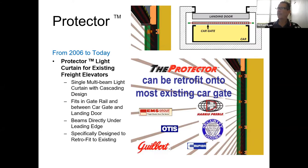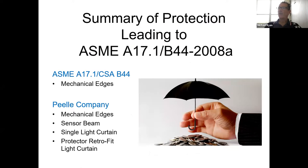In 2006, we developed a curtain called the protector, which was really suited for anybody's car gate, including manufacturers no longer in the business — Gilbert's gone, Otis is gone, Harris Preble is gone. It allowed elevator contractors to put on a light curtain in the existing gate track without having to replace the gate. The code folks wanted a mechanical edge for safety. Peely did at least that, but then we developed the sensor beam, a light curtain, and later on a protector.